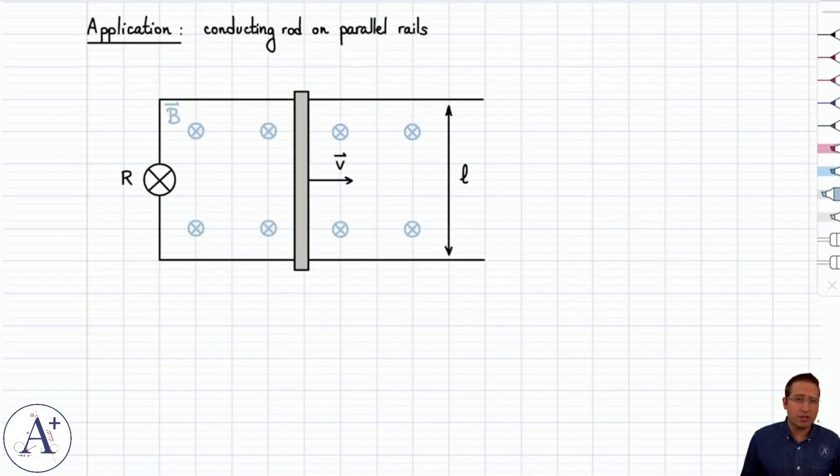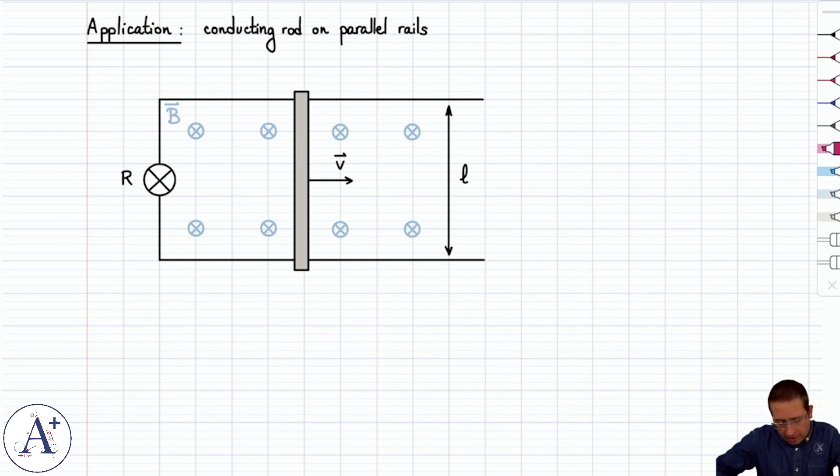Let's now go over our second application of Faraday's law, where the magnetic flux is going to change because the area through which we have magnetic flux changes with time. This is a very classic example called the rod on rails example, and what you have are two parallel conducting rails separated by a distance L and connected here with a conducting wire that has a light bulb that has resistance capital R.